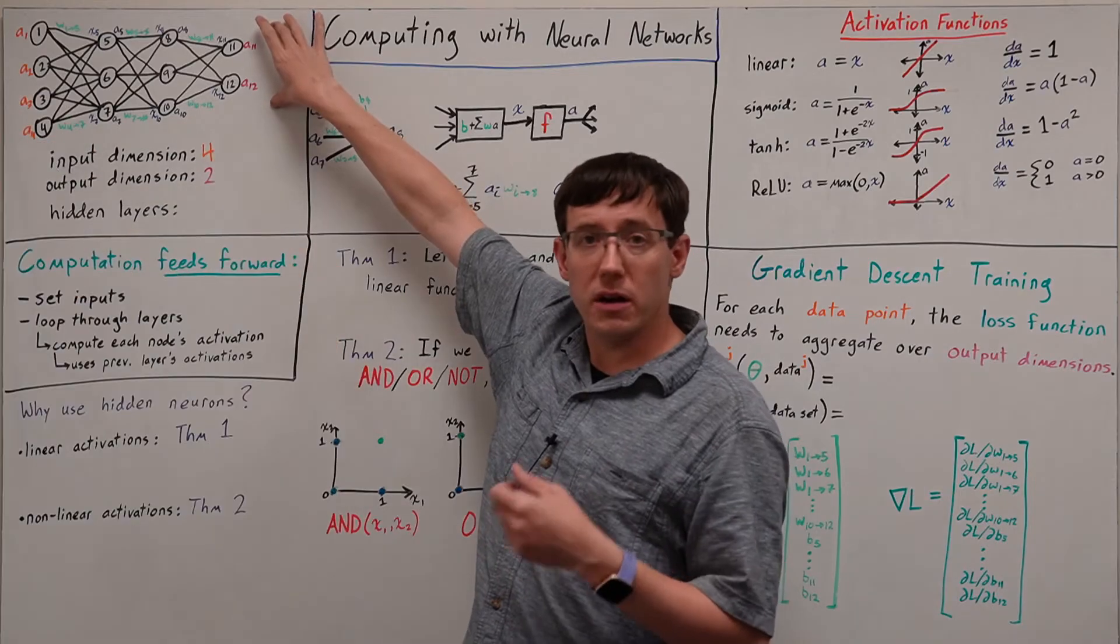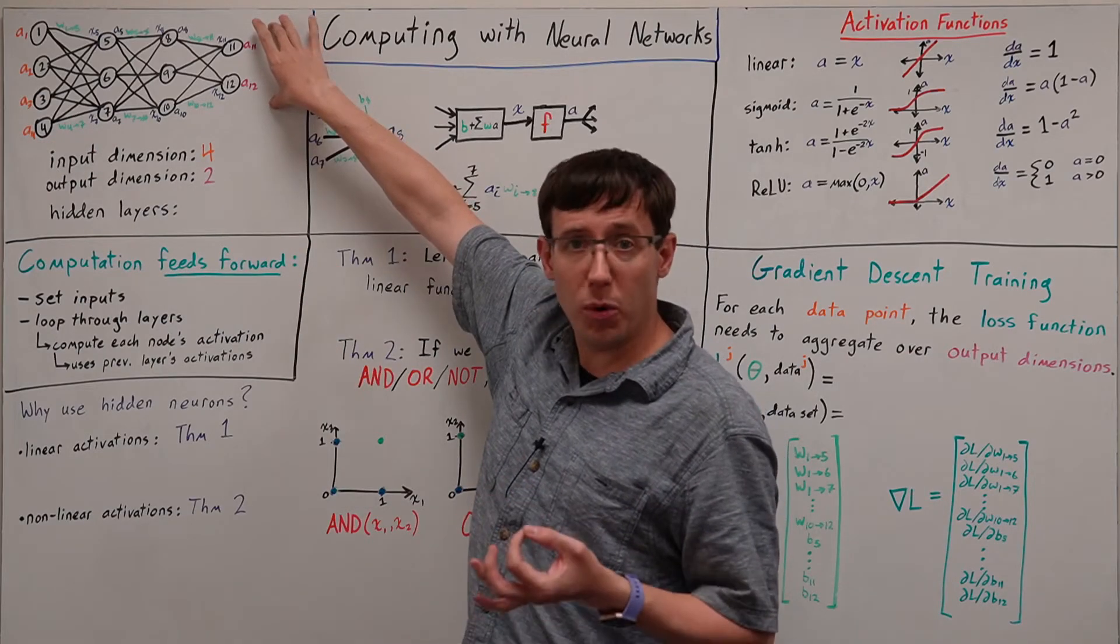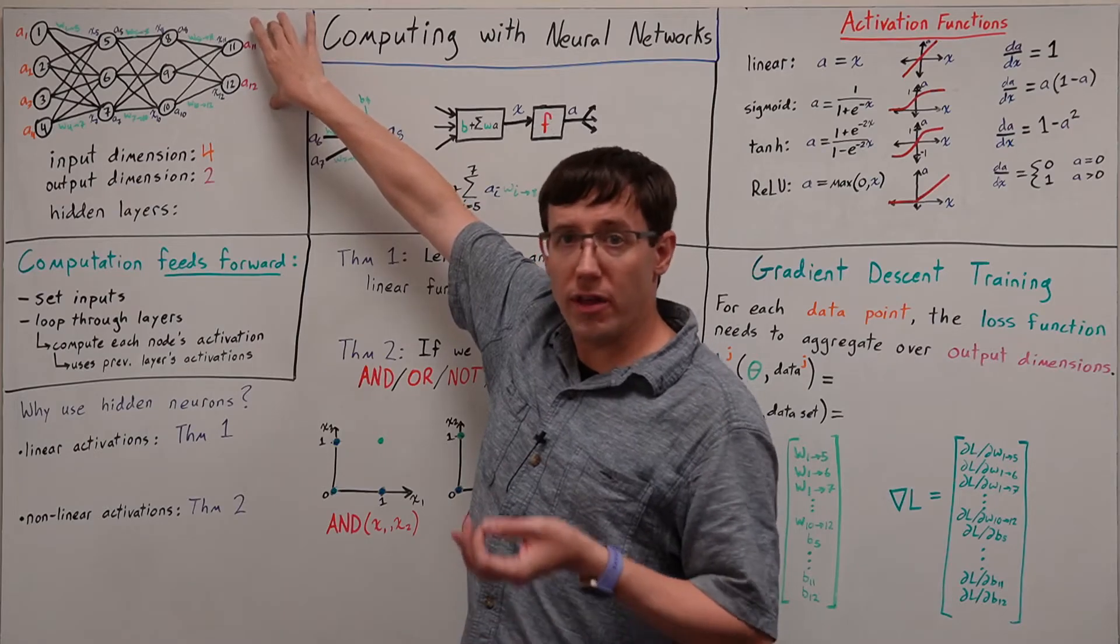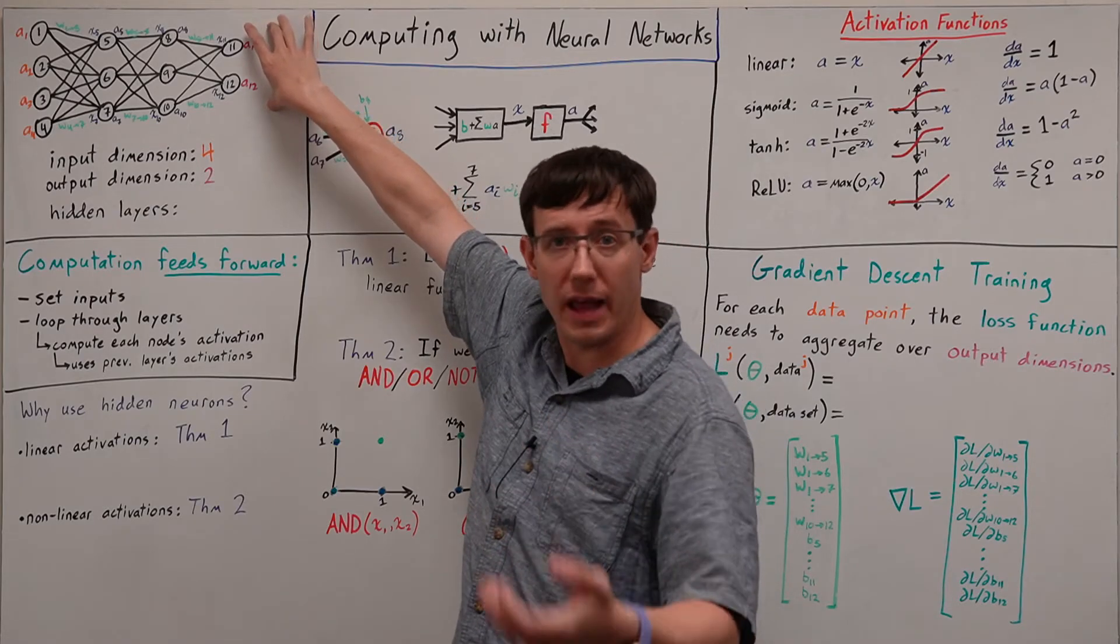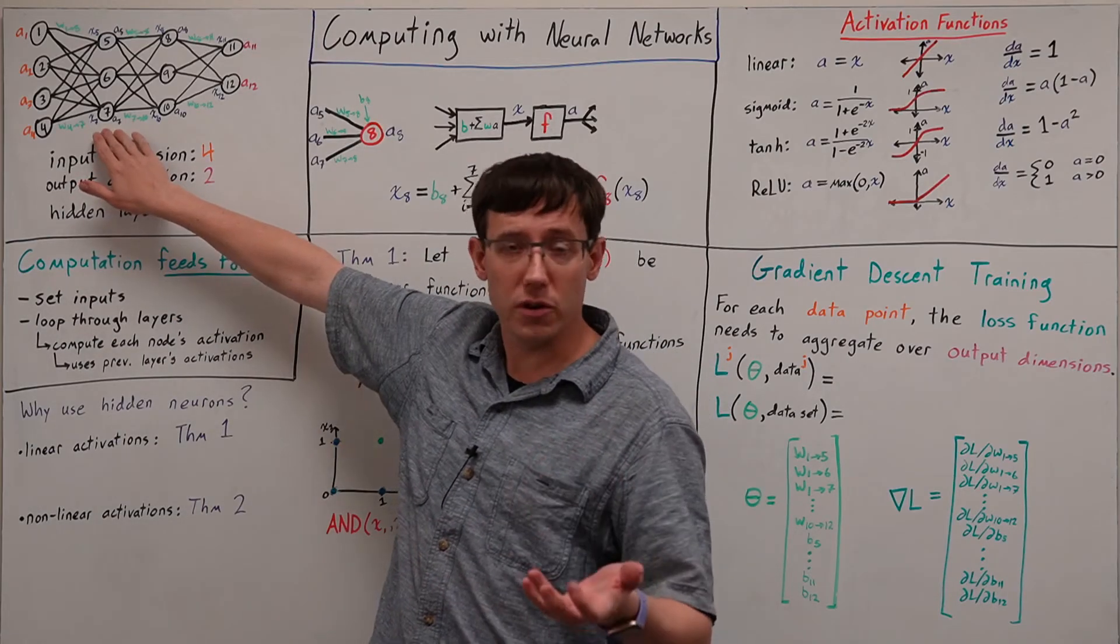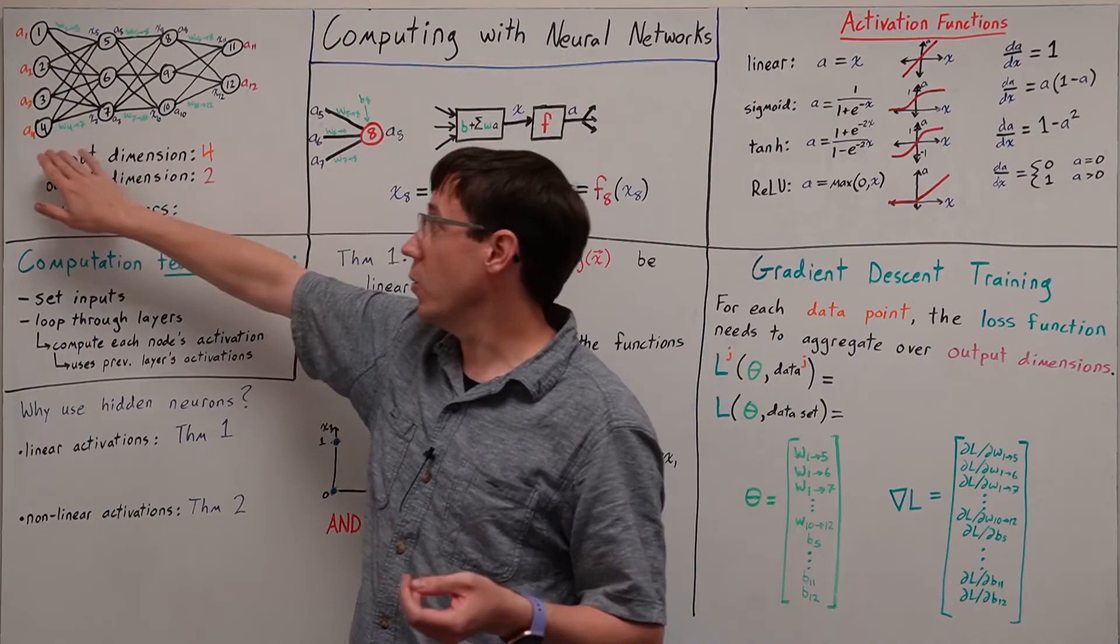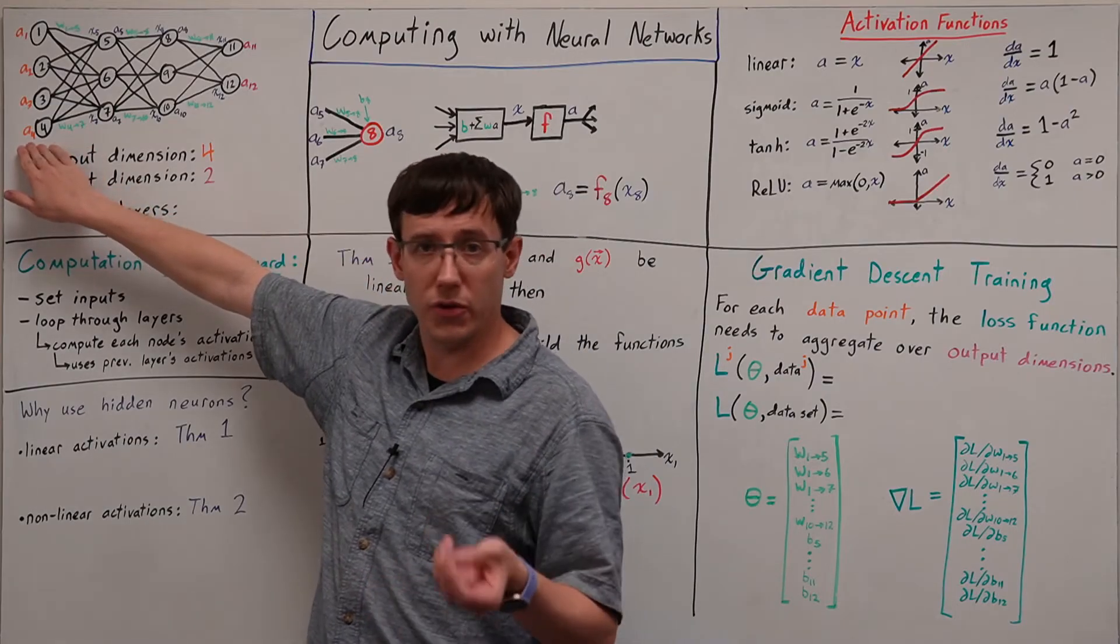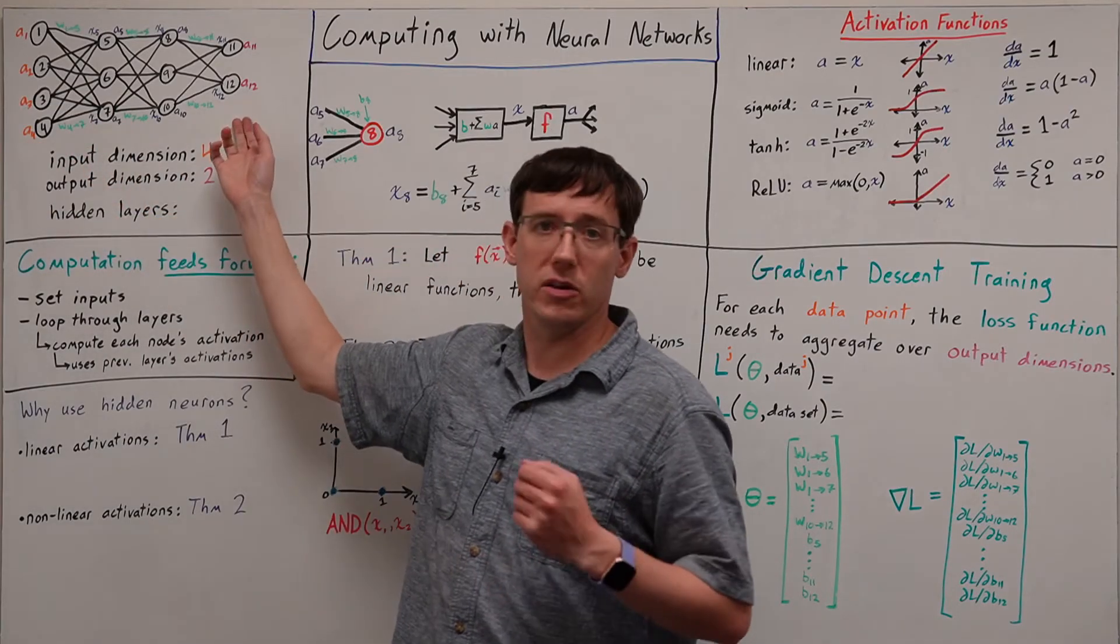So the network I have drawn is one that operates on four-dimensional inputs. Likewise, because we have two output nodes, we know that this network produces two-dimensional outputs. And so this network would be used for making predictions on a data set with four-dimensional observations and two-dimensional targets.